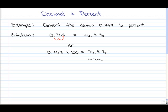Now if I wanted to convert the 76.8% back to a decimal, I would just do the opposite. So instead of multiplying by 100, I would now divide by 100. Or instead of moving the decimal point to the right two spots, I would just simply move the decimal point to the left two spots.